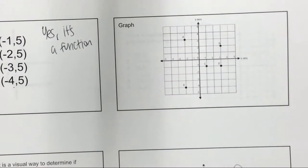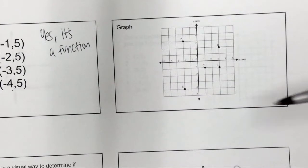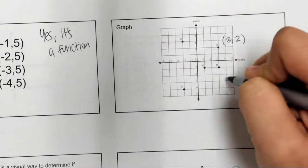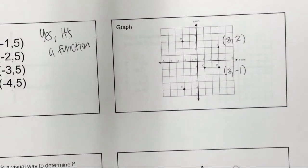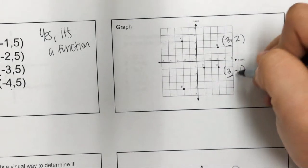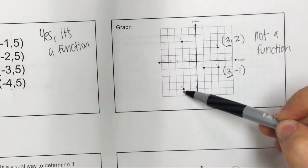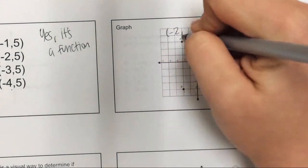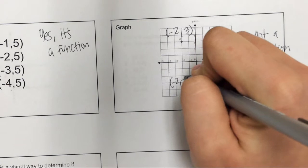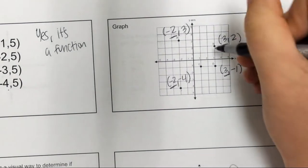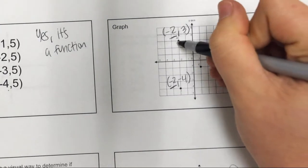The last thing we're going to look at is the graph. This is a graph of individual points and we need to decide if it is a function. Looking at the points: B is (3, 2) and D is (3, −1). If you notice, I have the same x value in each one — that cannot happen. We want each x value to be unique. Since these two have the same x value, it makes this graph not a function. The same thing happens with points A at (−2, 3) and E at (−2, −4) — those x values repeat, so it's not a function.